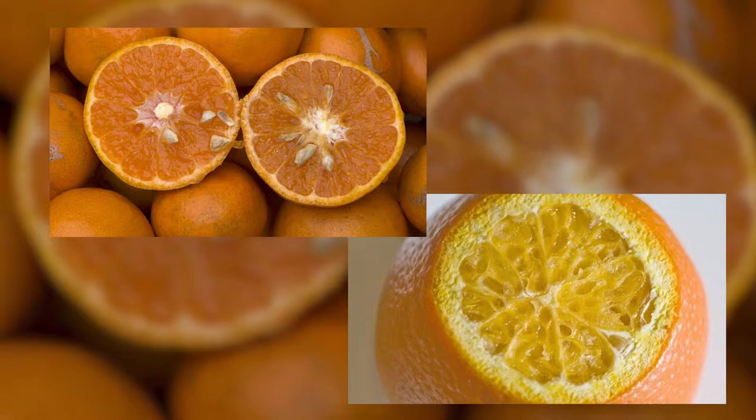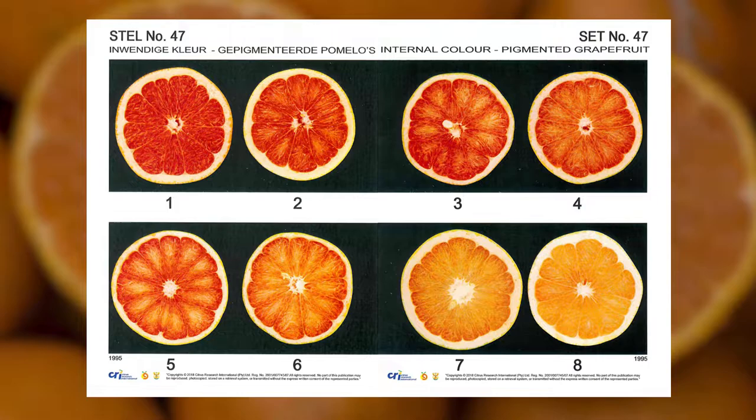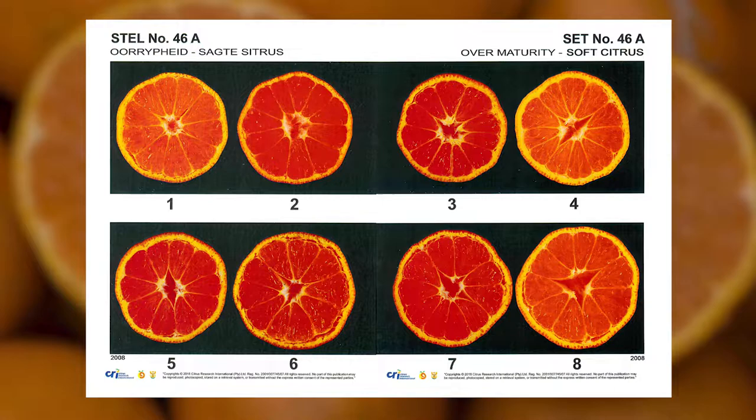Seediness and granulation are another two internal quality factors that are regulated, as is internal fruit colour for pigmented grapefruit. Standards are also set for overripeness, which can also be considered as an internal quality factor.